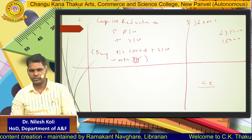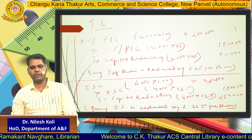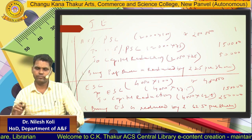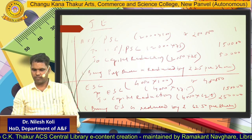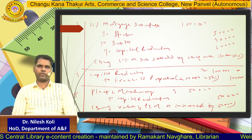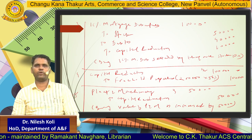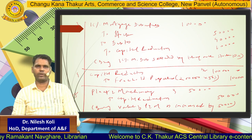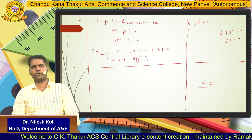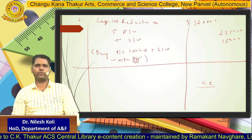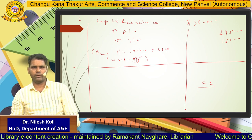So these are the journal entries: (1) preference share capital account debit to capital reduction account ₹50,000; (2) equity share capital account debit to capital reduction account ₹2,50,000; (3) 16% mortgage debenture debit to stock, debtors and capital reduction account ₹10,000; (4) capital reduction account debit to freehold property ₹1,00,000; (5) plant and machinery debit to capital reduction account ₹50,000; (6) capital reduction account ₹2,60,000 debit to P&L account ₹2,45,000 and goodwill ₹15,000.